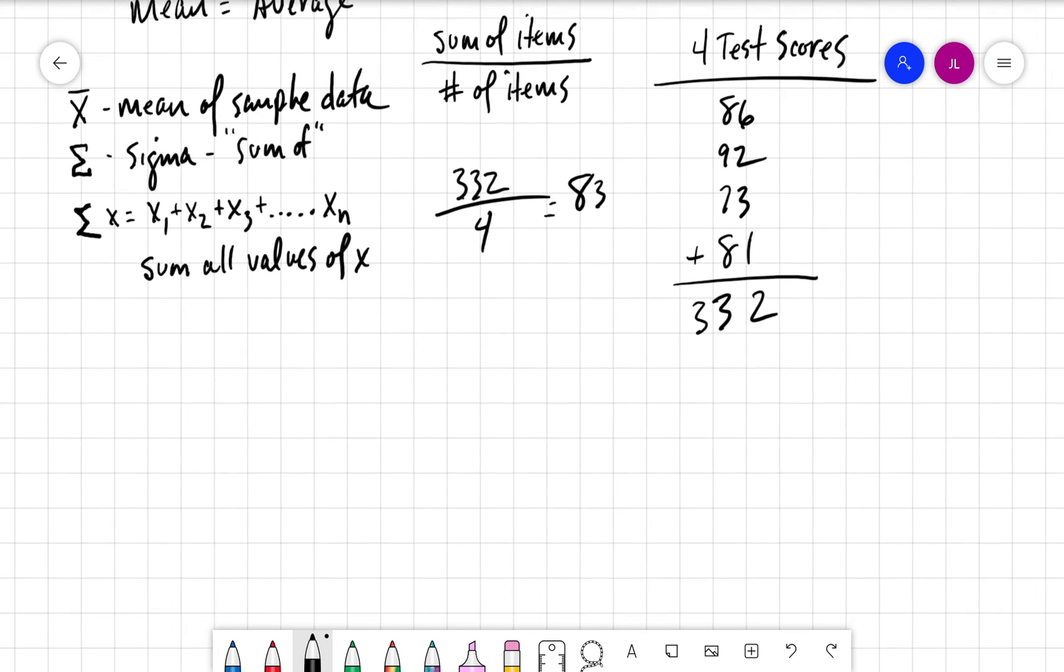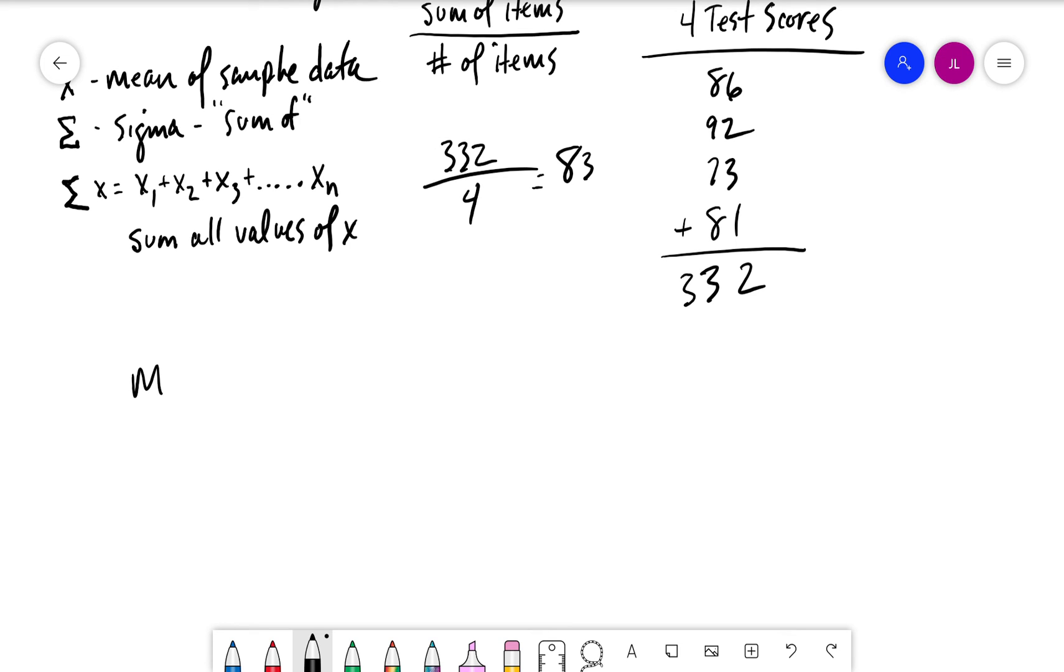So basically, if we think about this and these new notations that we have, that means essentially the mean would be x̄, so there's our mean of sample data, is equal to the sum of x over n. And basically that's what we're doing here. We're summing up all the data, this will be all our variables, all our scores here in the test scores. The sum of x, that's the sum of all these, we divide it by n, which is n is number of items. So it's pretty simple.